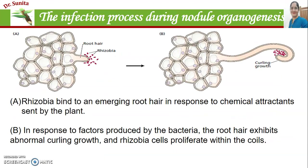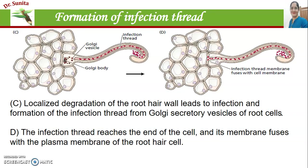When rhizobia attach to the root hair, the tips of the root hair become curved, forming a hook-like structure. Then the rhizobia secrete enzymes and degrade the root hair cell wall. The root hair cell wall is degraded, and this allows entry of the bacteria.